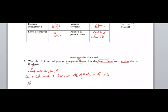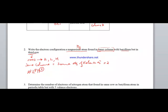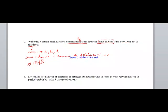Being in the same column as Beryllium means we have the same number of valence electrons, which is 2. Therefore, the electron configuration of magnesium will be K2 L8 M2, where M2 is the number of valence electrons, the same as Beryllium.